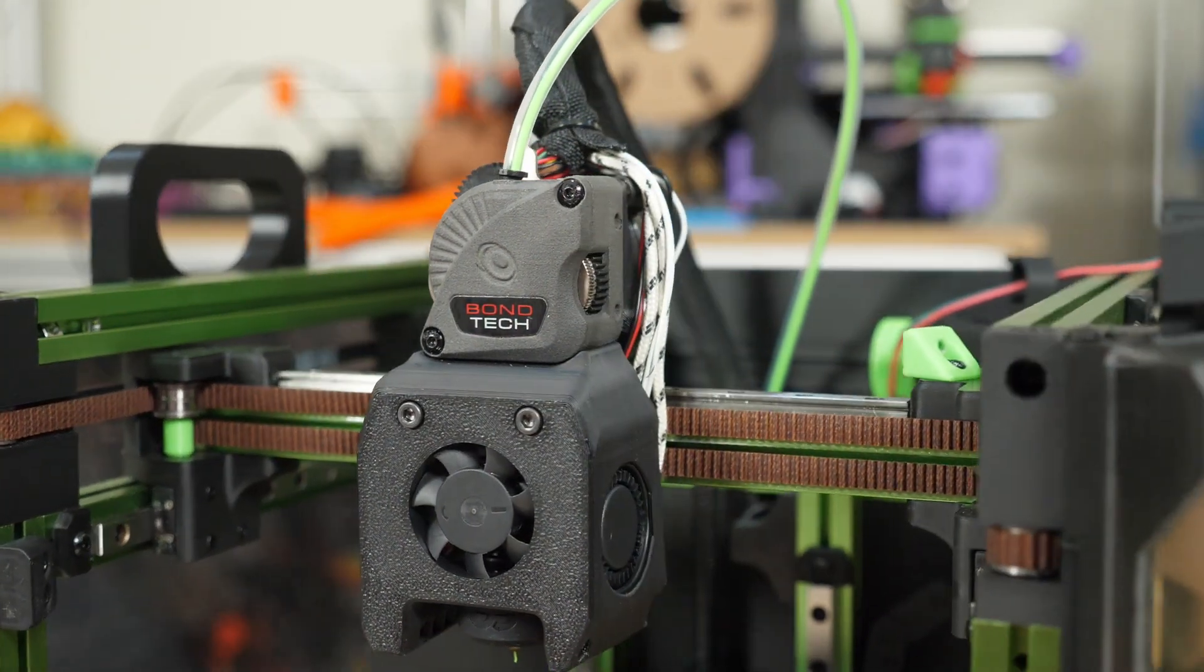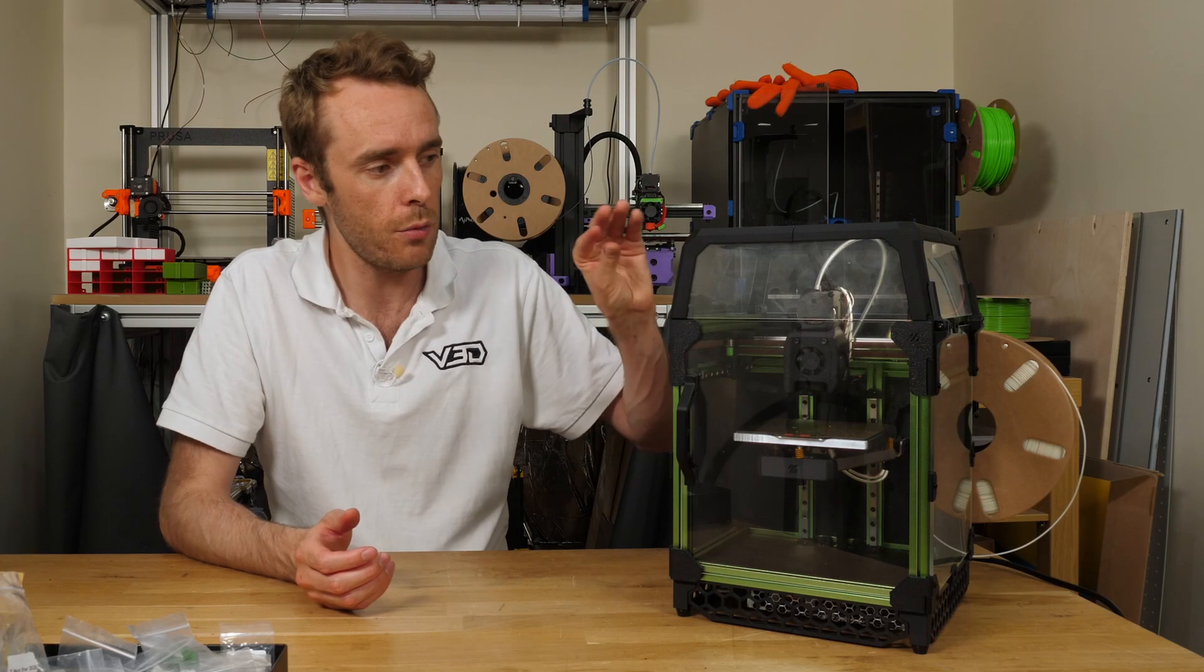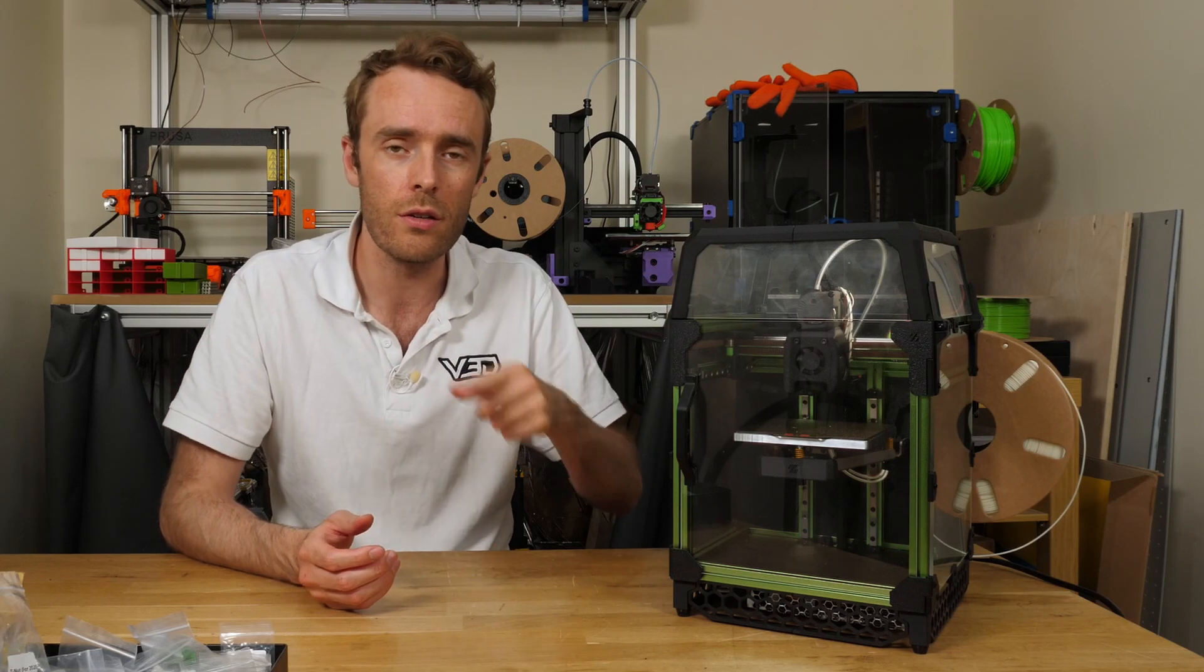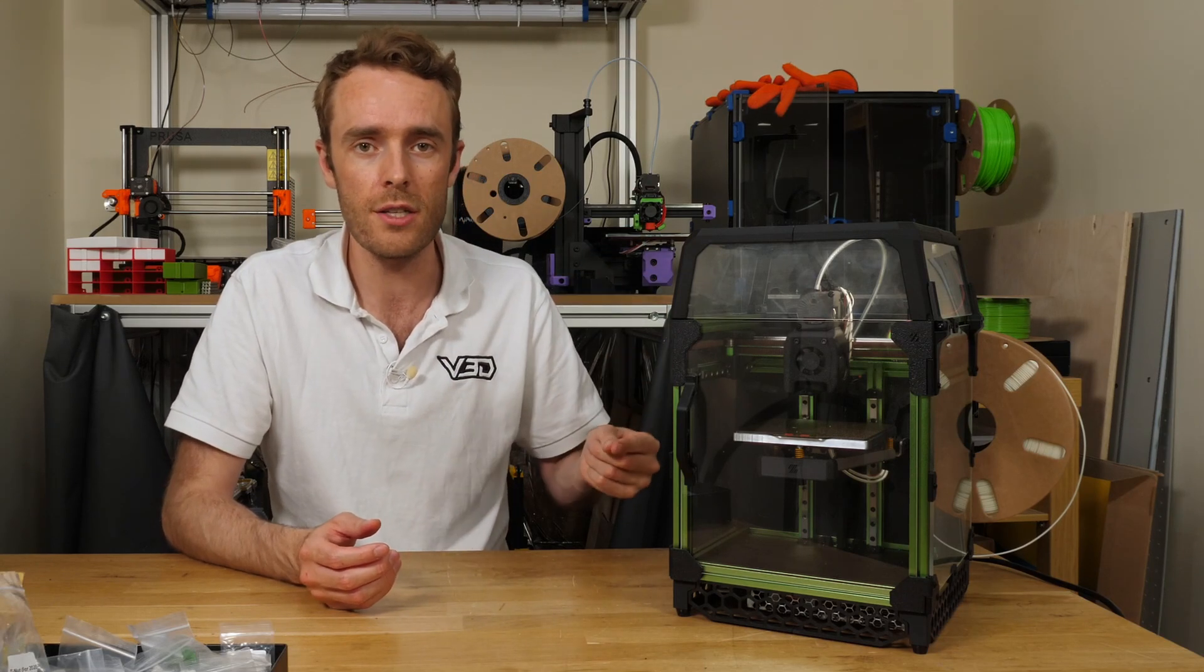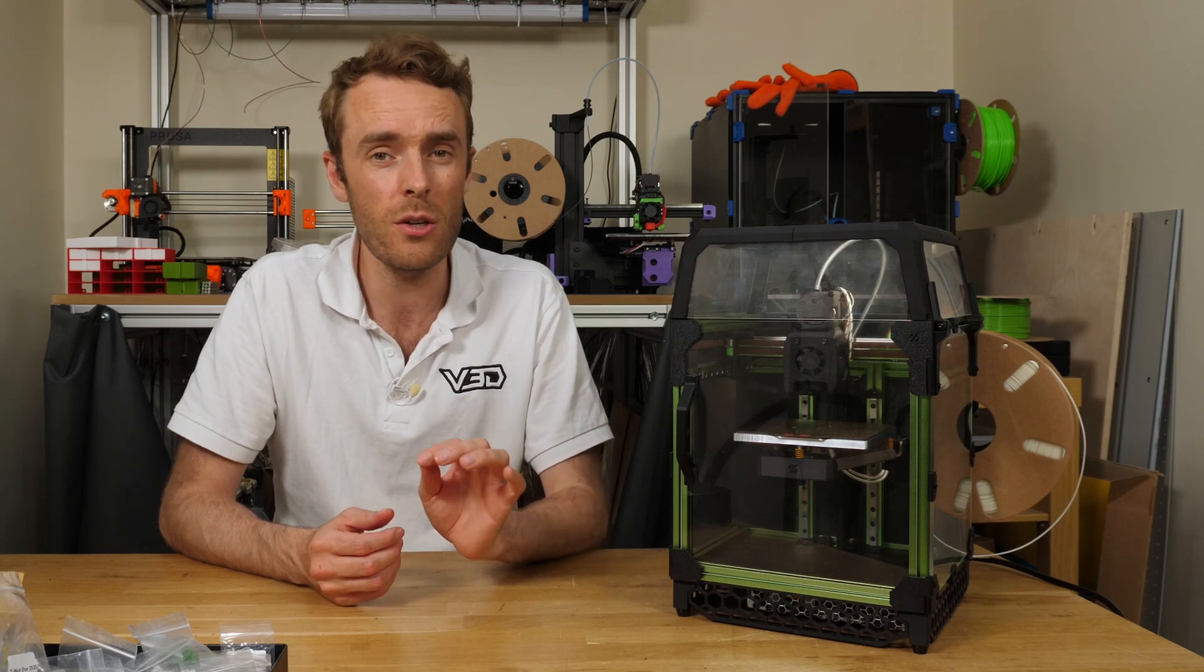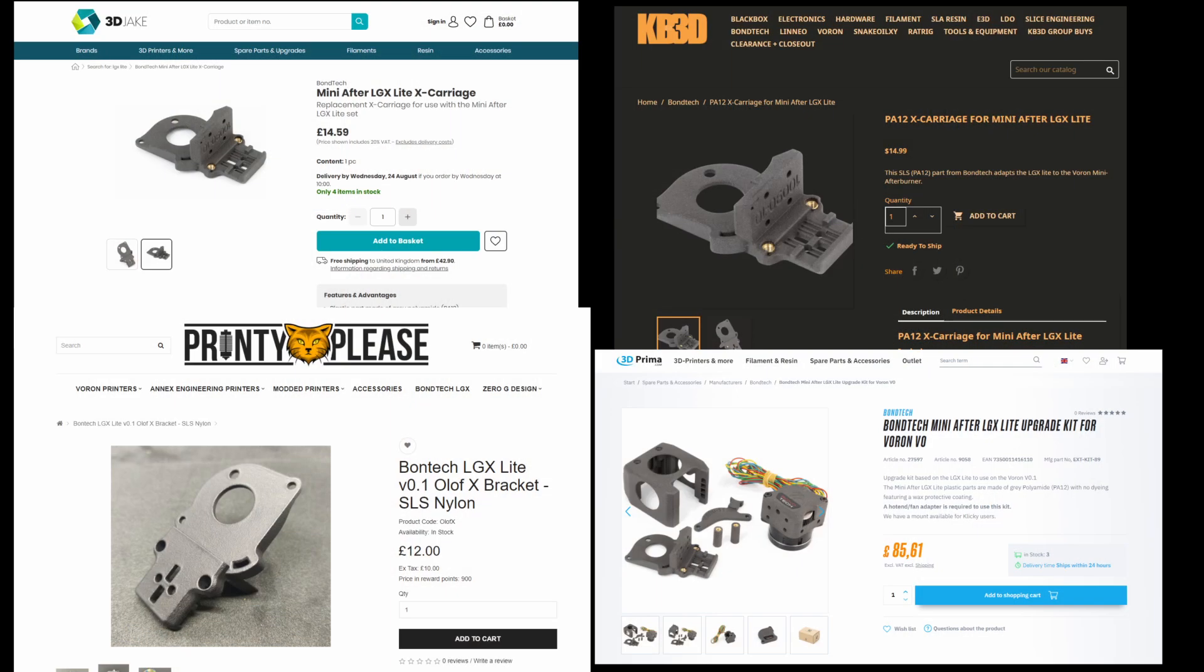One thing I would say is that the 3D printed parts needed to assemble this extruder, not the ones that come with it but the ones specifically for the V0, I would try and find someone that can print them in SLS. You can buy those from shops, and I think you can get them from Bondtech as well as an upgrade kit.